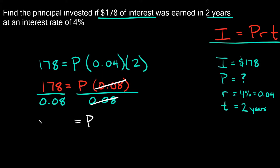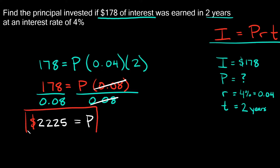178 divided by 0.08 gives you 2,225. And the units for principal are dollars, so P is equal to $2,225. That's your answer.